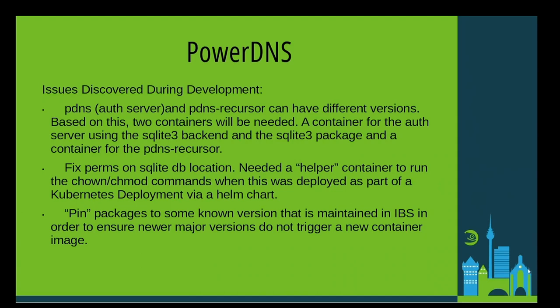During the test deployments, a few issues arose that needed to be addressed. The first was realizing we needed two containers and not just one. This is due to differences in the version numbers of the pDNS recursor and authoritative server in OBS. By splitting this into two containers — one for the recursor and one for the authoritative server — each container version tracks the installed package version.